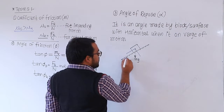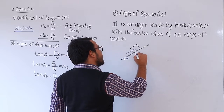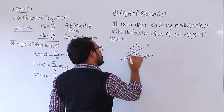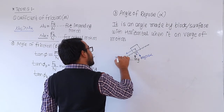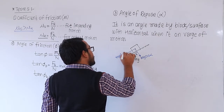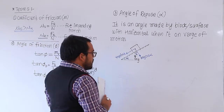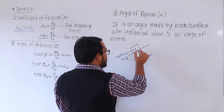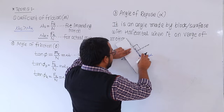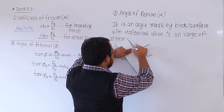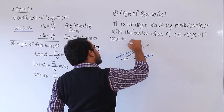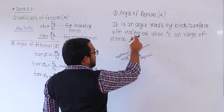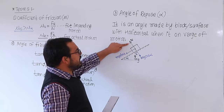These are the two components. If this angle is alpha, then again this angle is alpha. This component is mg cos alpha and this is mg sin alpha. There is always a perpendicular reaction from the surface. It is the rough surface, so from that surface there is a normal reaction N.